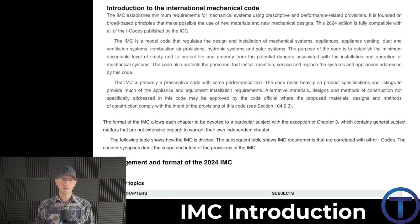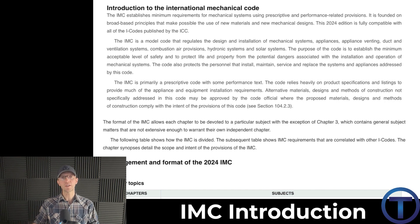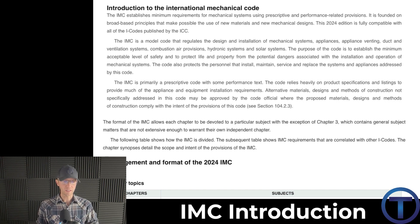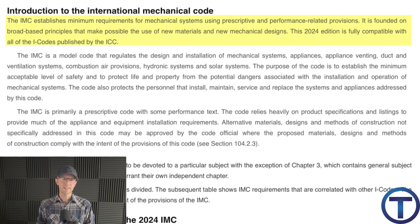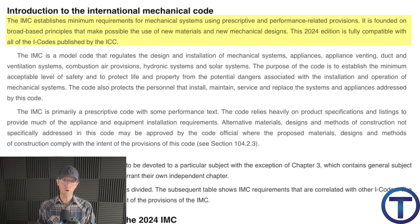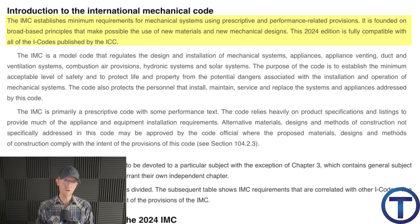Let's move on to the introduction to the International Mechanical Code. This is where they explain what is in this code. And as a plumber, this is where you really need to understand what is useful information to you in this book, because there are major chapters in here that are not. It says the International Mechanical Code establishes minimum requirements for mechanical systems using prescriptive and performance-related provisions. It is founded on broad-based principles that make possible the use of new materials and new mechanical designs.